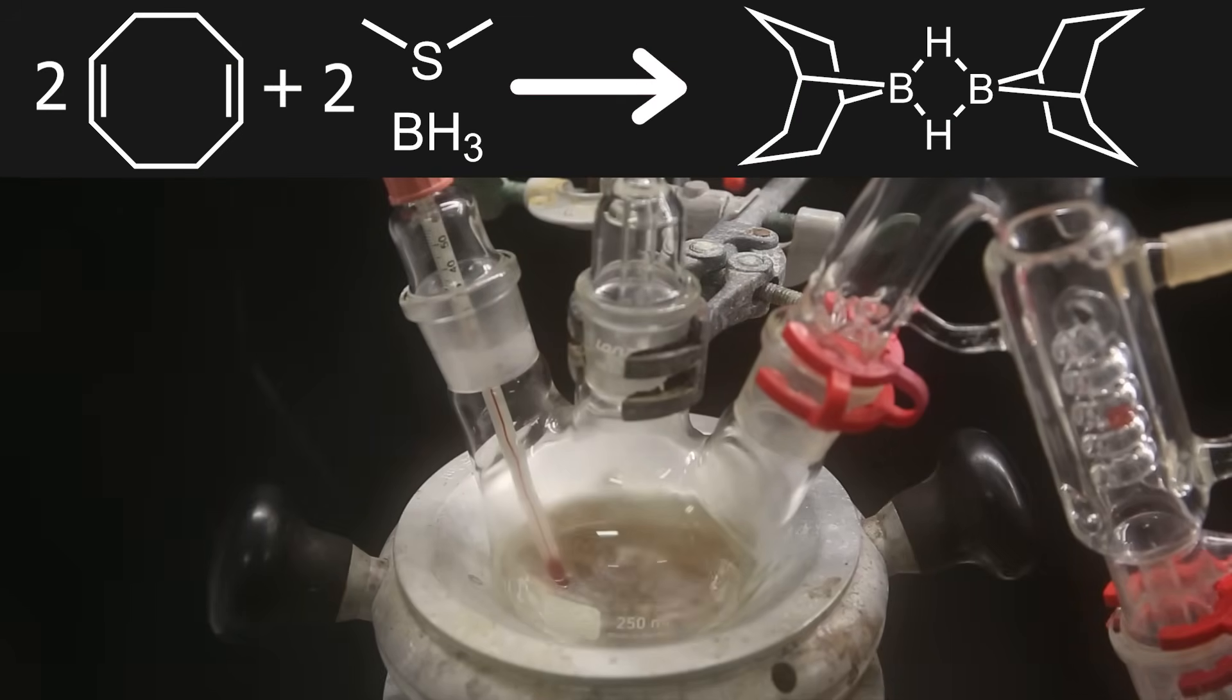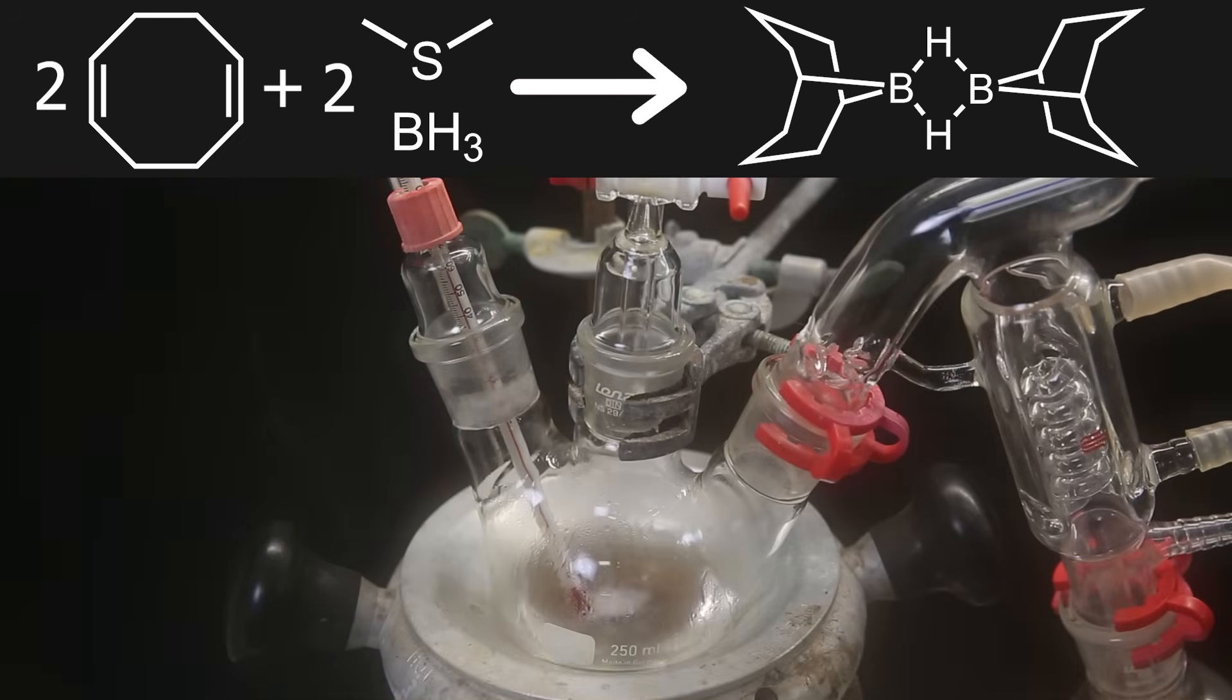In this reaction, two borane molecules will react with two 1,5-cyclooctadiene molecules to form 9BBN, while leaving behind the dimethylsulfite, which will distill off during and after the reaction. The compound is fairly unique in that it is a hydride-bridge dimer. In general, a hydrogen with two bonds is cursed, but in this case it is relatively stable.